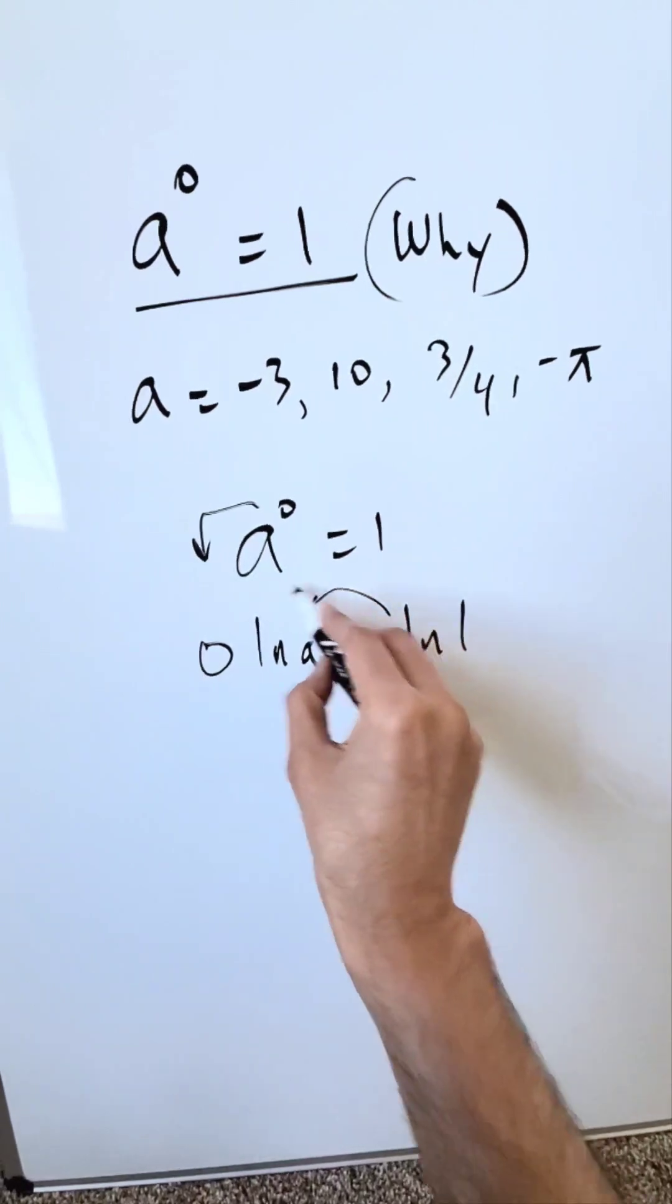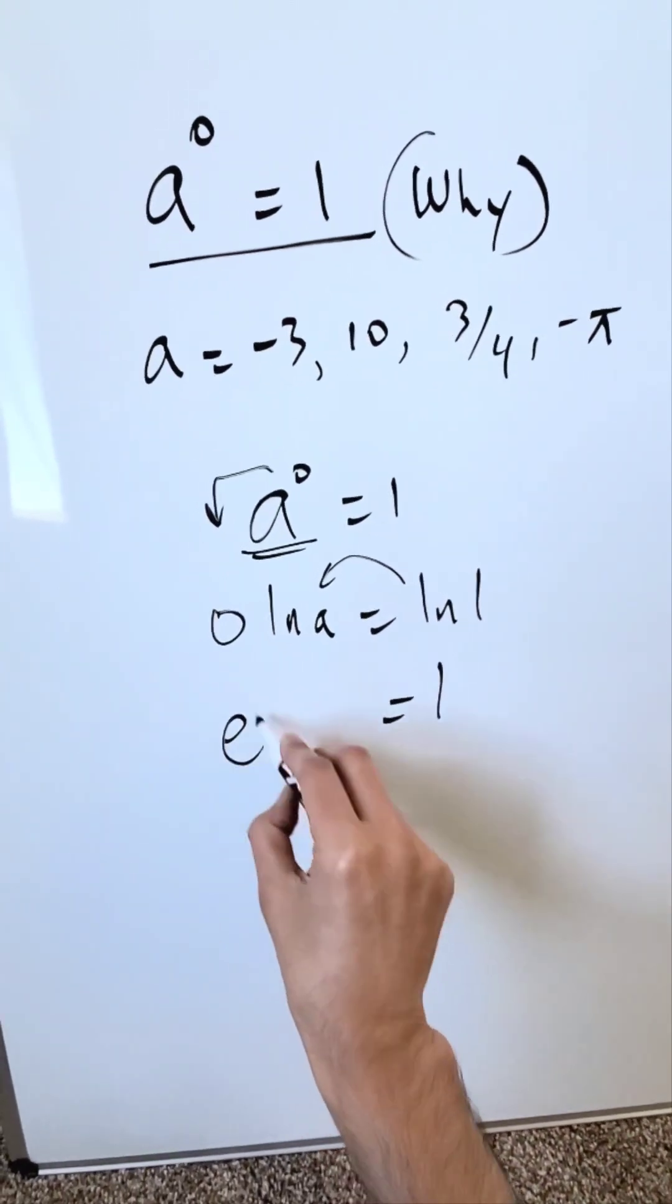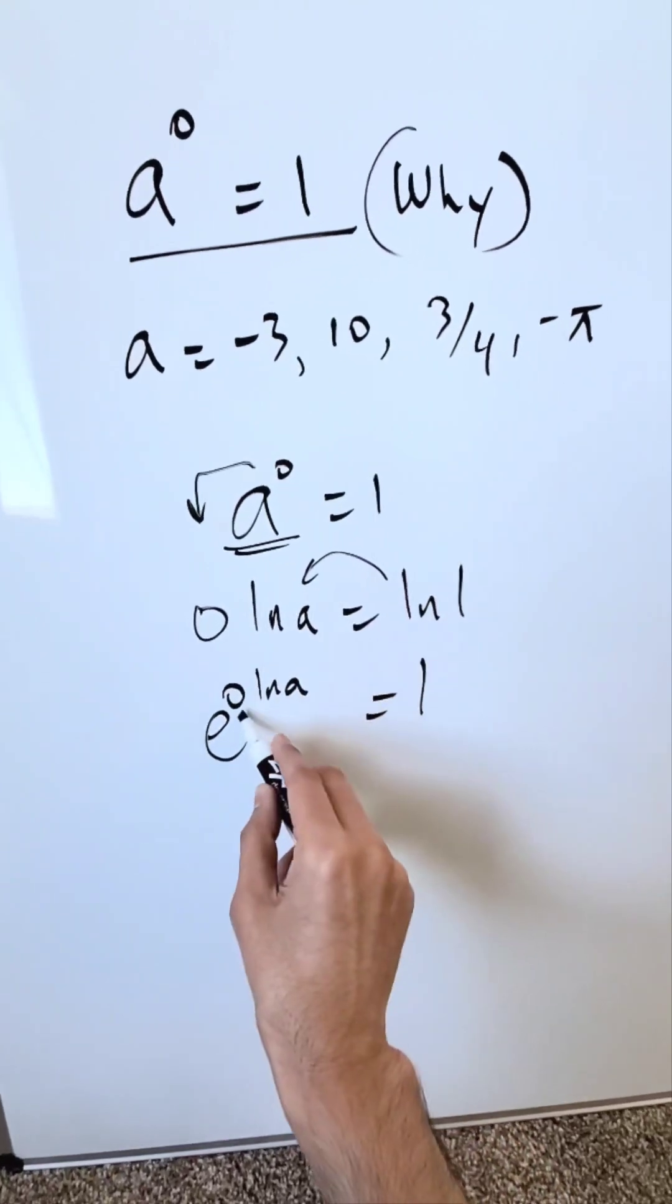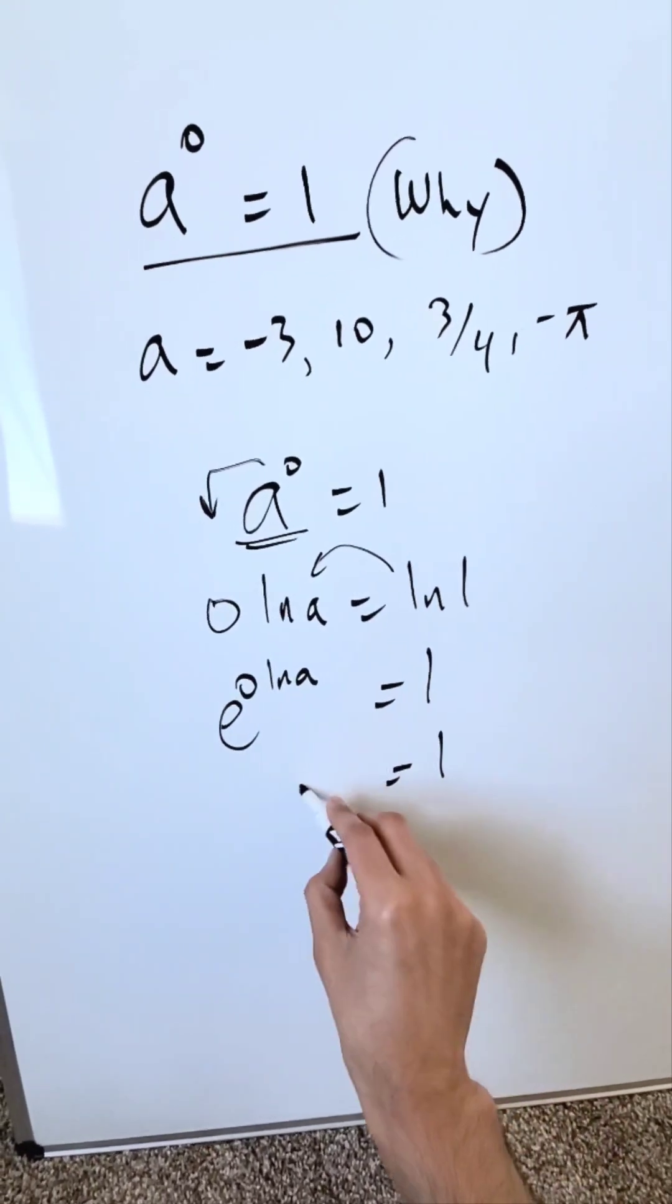Now convert your base a into base e. Push the natural log on the other side. I have 1 here is equal to e to the power of 0 natural log a. This 0 multiplies with the natural log and a 0 is out. So I am looking here at 1 is equal to e to the power of 0.